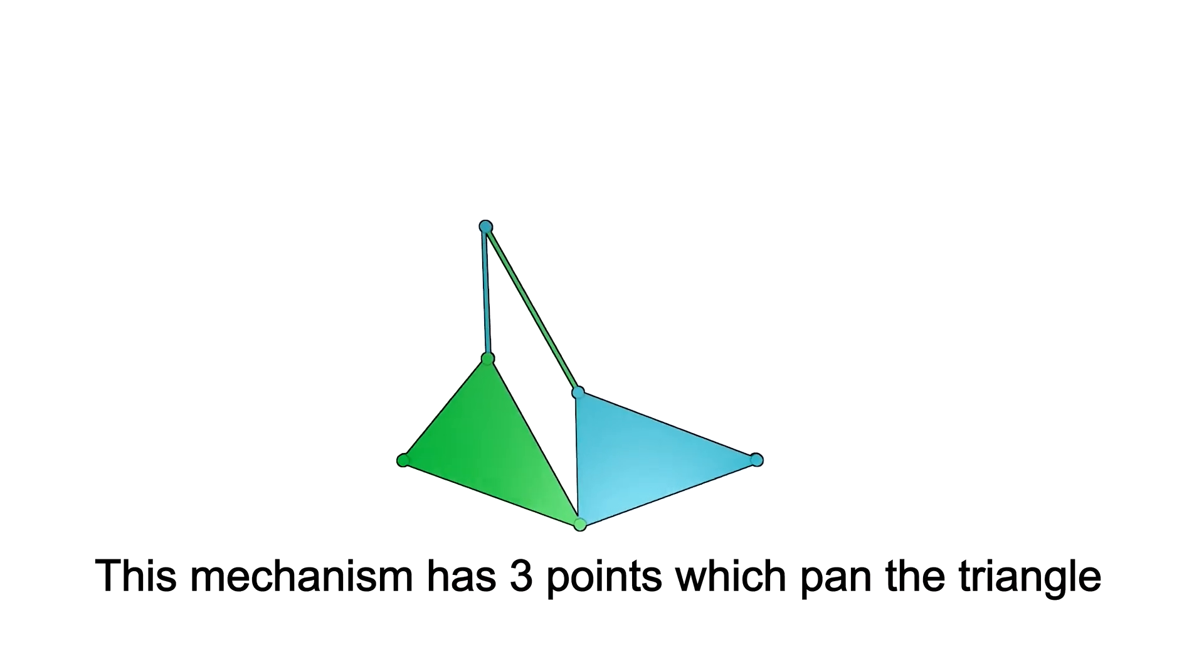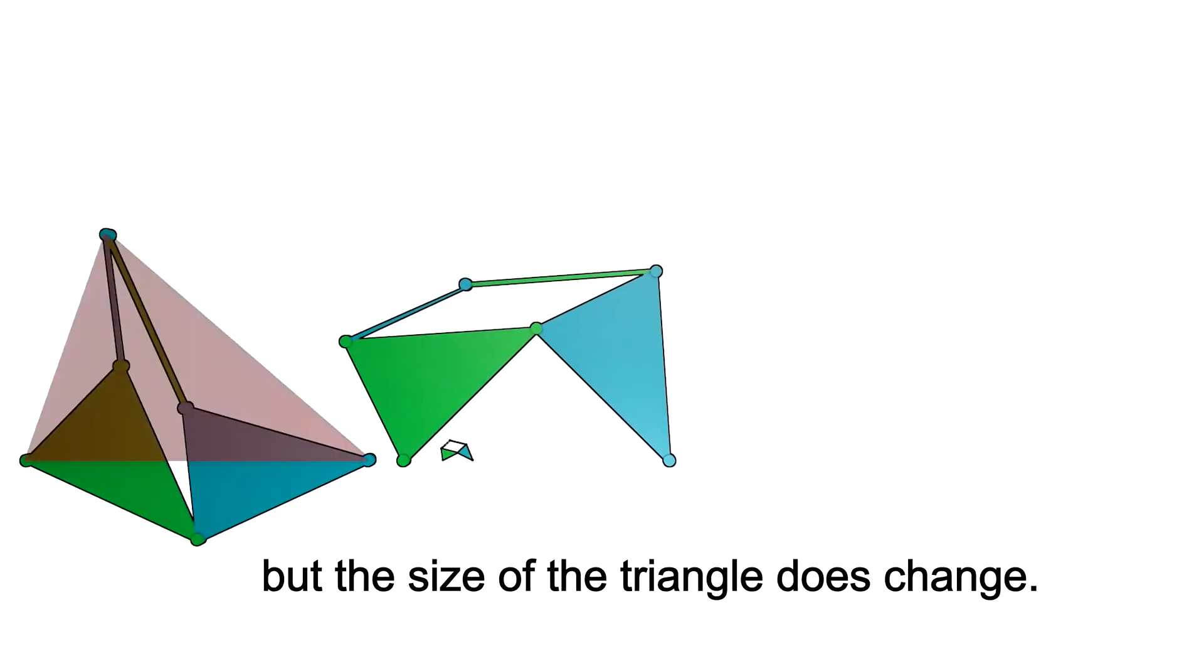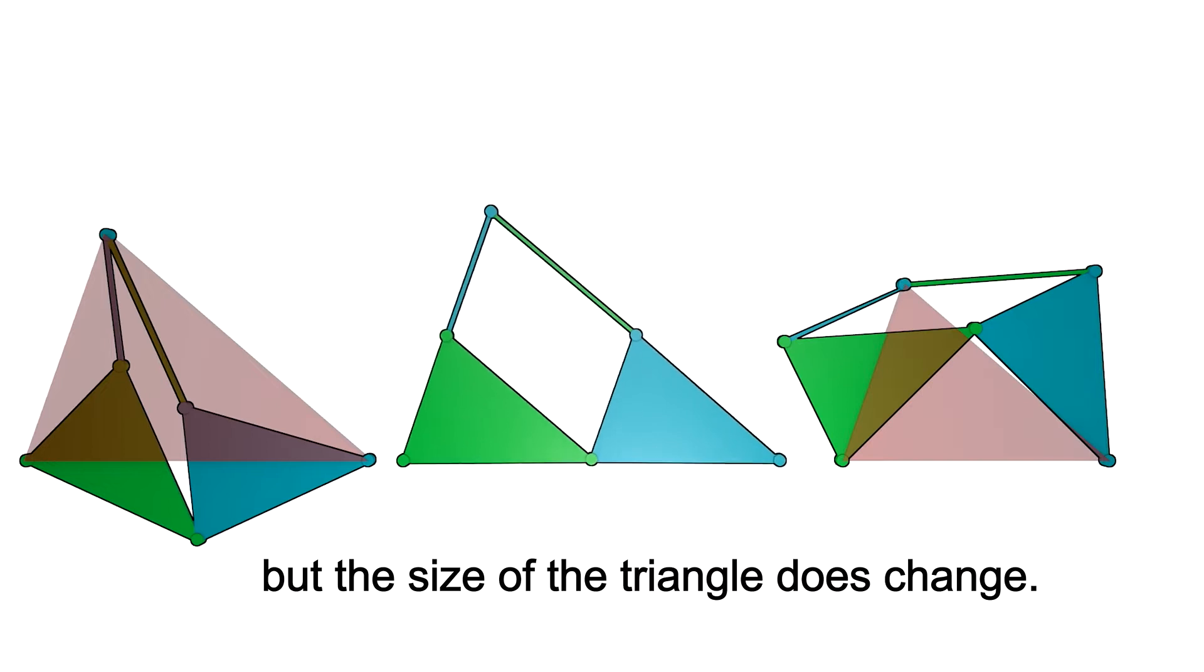This mechanism has three points which span a triangle that remains similar when it moves, but the size of the triangle does change.